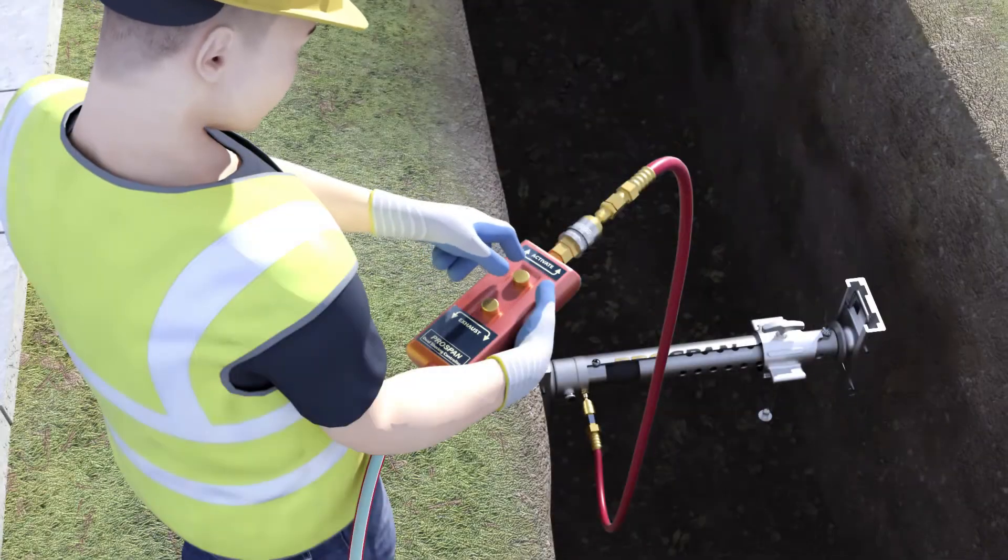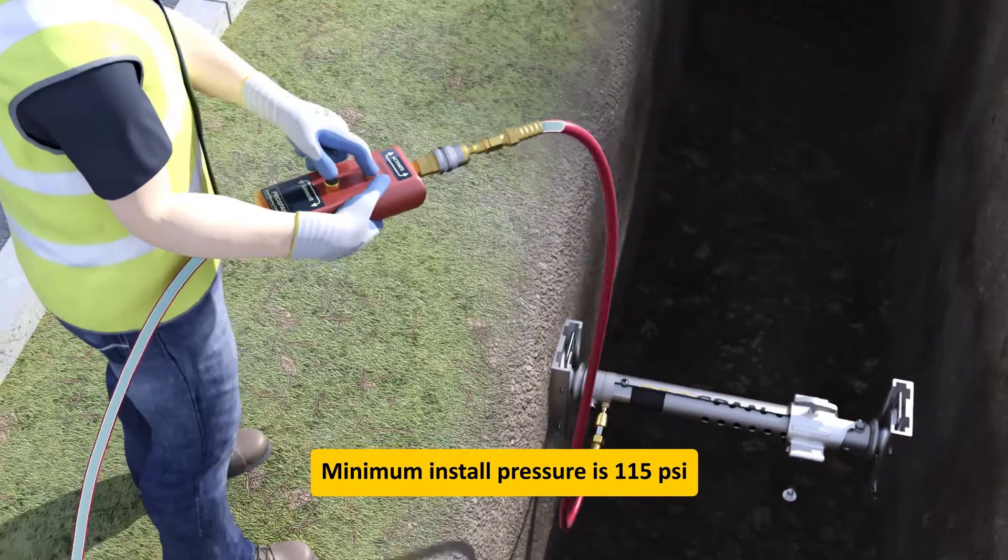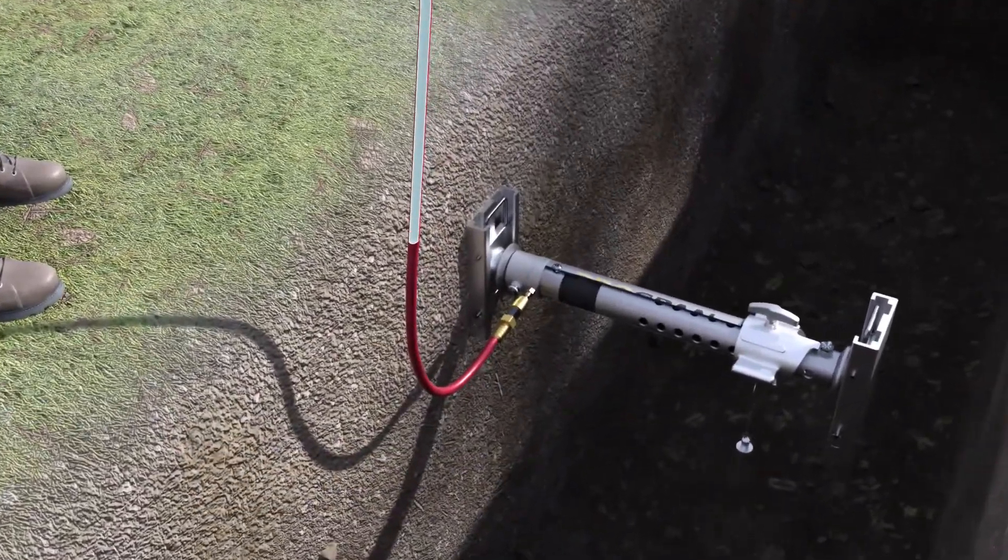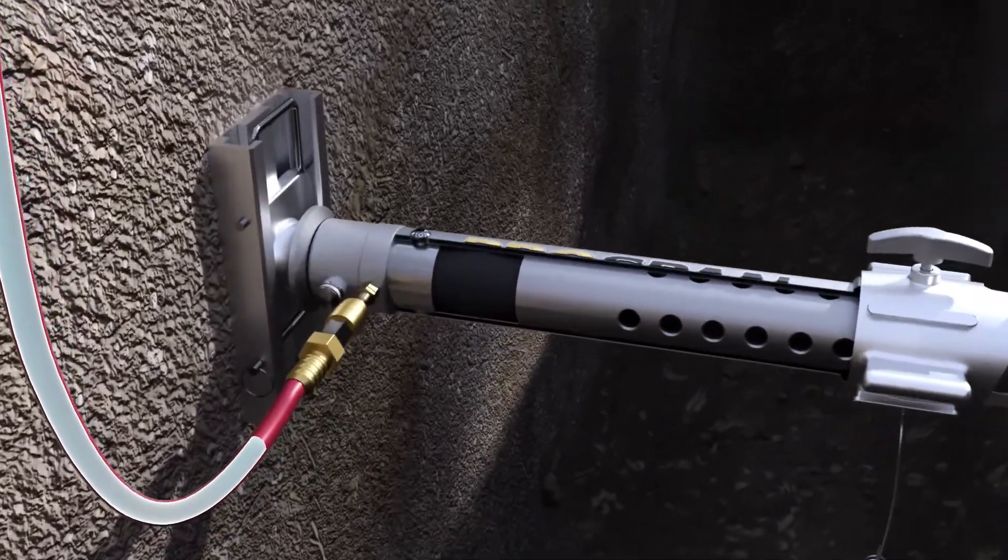The shoring controller receives its source pressure from either an onboard air compressor commonly found on most utility trucks or from bottled air. Once activated, the controller sends this pressure to the ProSpan.